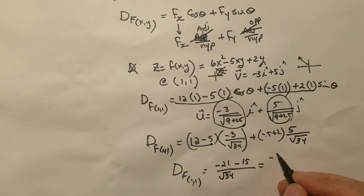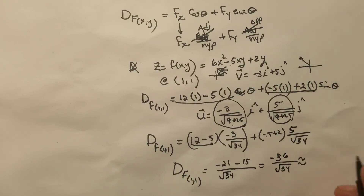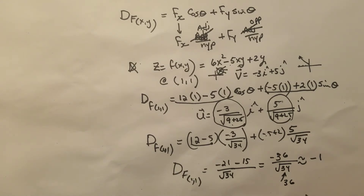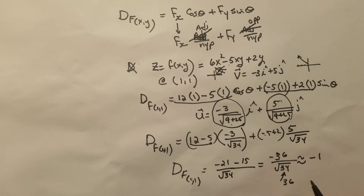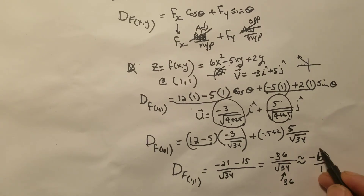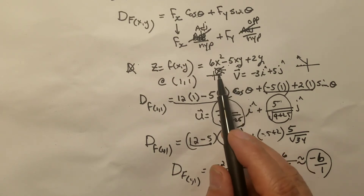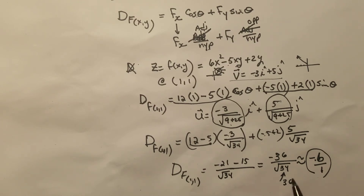That gives us −21 − 15 = −36 over √34, which is approximately −36/6 = −6, since √34 ≈ √36 = 6. Therefore, the directional derivative from the point (1, 1) in that direction means: if you take one step forward in the x direction, your function value goes down 6 units.